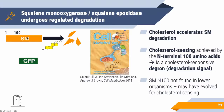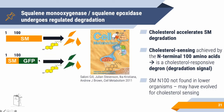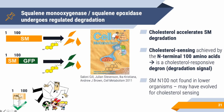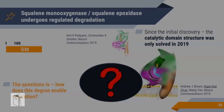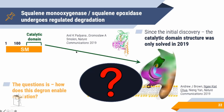Squalene monooxygenase is degraded in response to cholesterol, and what's remarkable is that a specific 100 amino acid region — the N100 domain — is essential for this process. This region can sense cholesterol in the environment, and when fused to a normally stable protein like GFP, it can transfer cholesterol-sensing capacity to that protein. We call this a degron — a transferable degradation signal. Notably, this 100 amino acid region is only found in higher organisms like humans and mammals, completely absent in yeast, suggesting it evolved to enable cholesterol sensing.